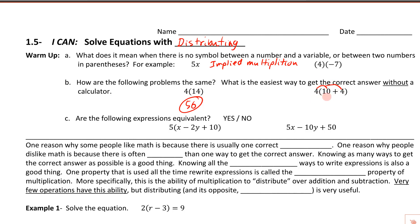We multiply through: 4 times 10 is 40, and 4 times 4 is 16. We transfer that plus sign down and add them together, ending up with 56. This says: let's just multiply through and then add them together when we're done.